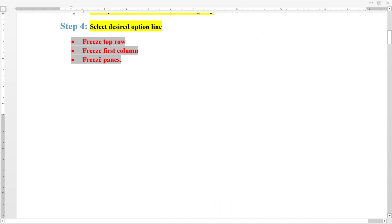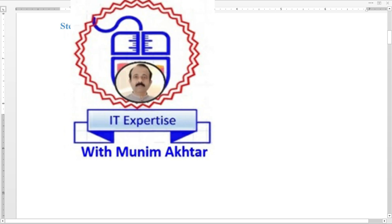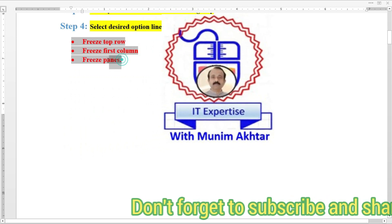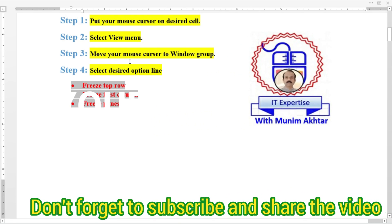Third step is Freeze Panes. If you want to select a number of panes, you can select them from multiple rows and columns. Then select Freeze Panes. This is all about the freeze pane.